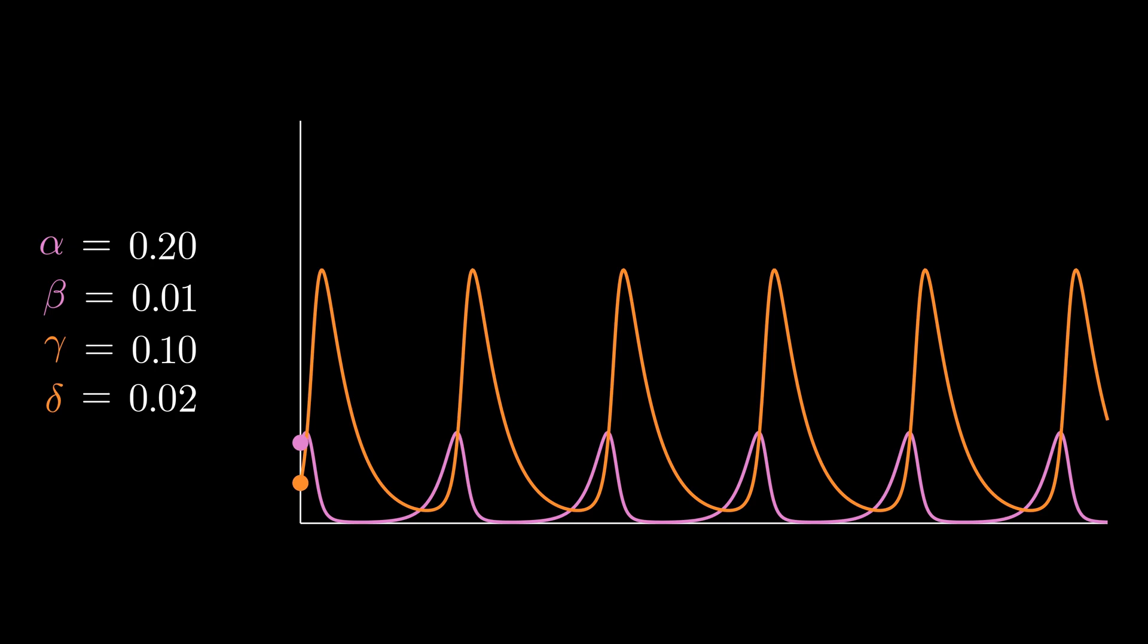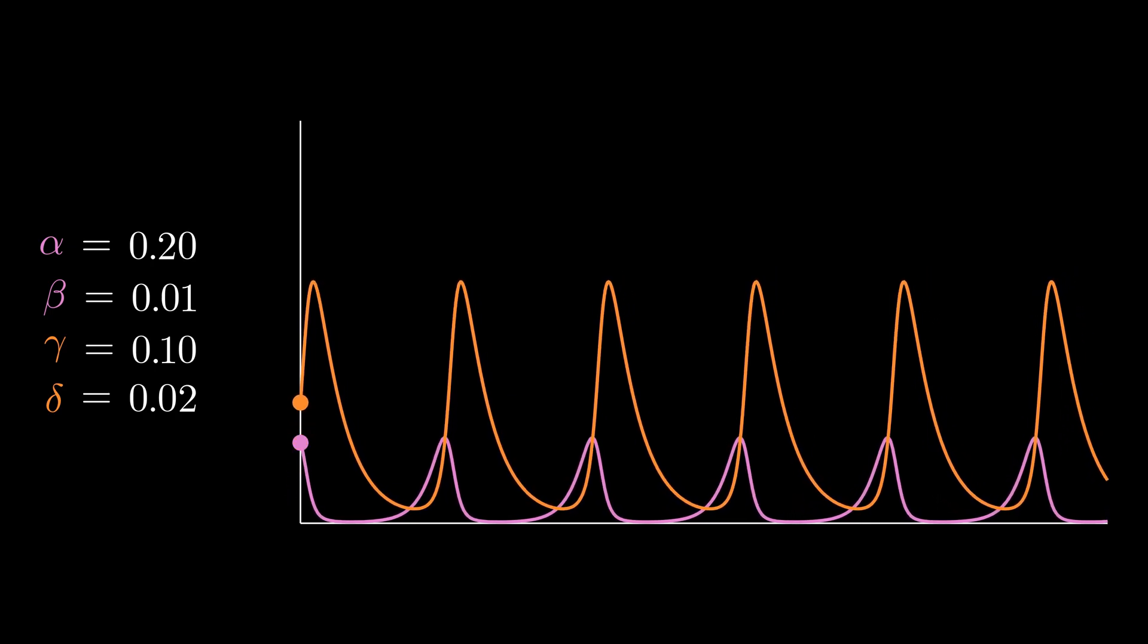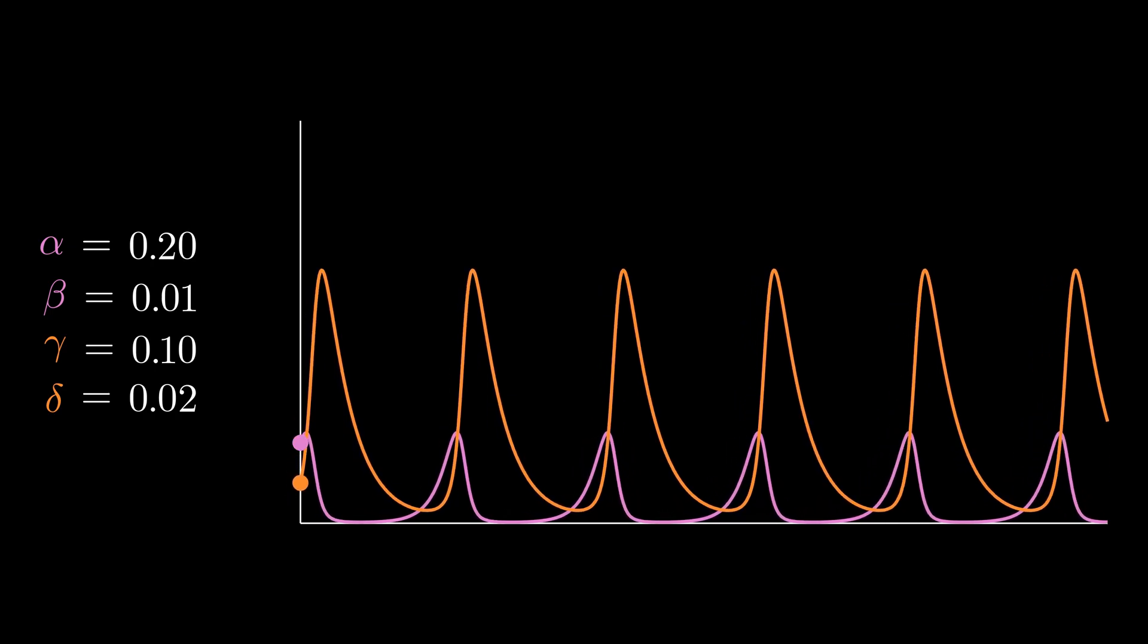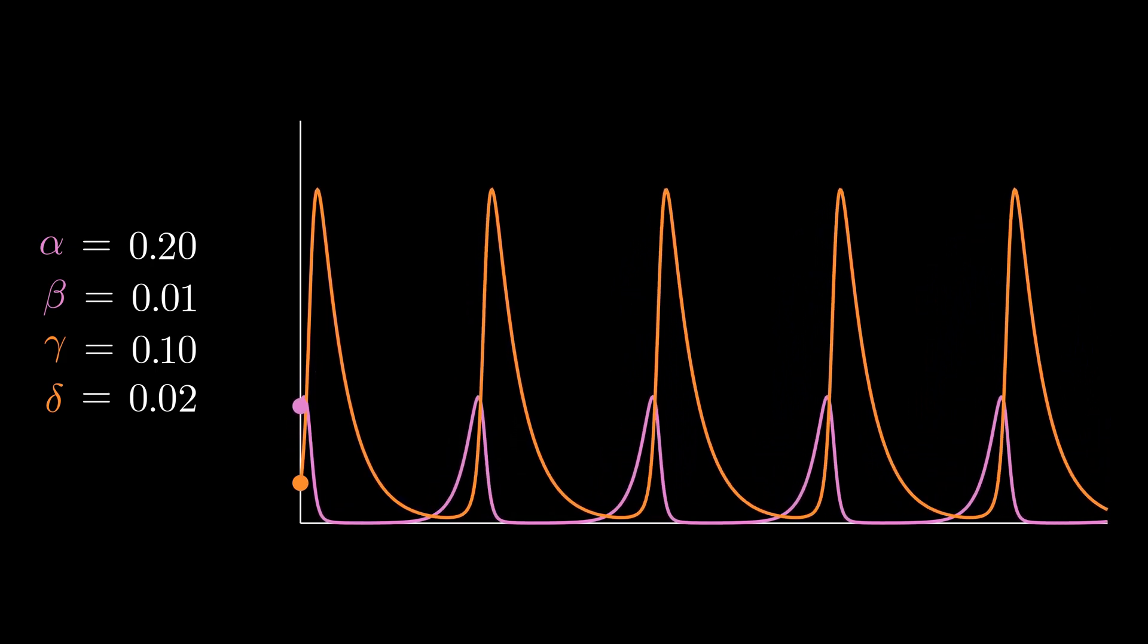But let's see what happens when we for example change the initial amount of predators. Not much. It seems like it's pretty predetermined. However, tuning the number of prey almost linearly affects the amplitude of the oscillation.